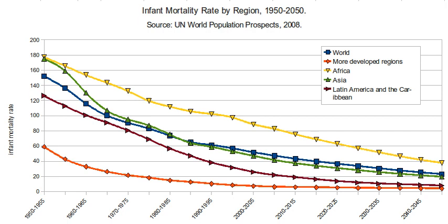Low birth weight makes up 60–80% of the infant mortality rate in developing countries. The New England Journal of Medicine stated that the lowest mortality rates occur among infants weighing 3,000 to 3,500 grams. For infants born weighing 2,500 grams or less, the mortality rate rapidly increases with decreasing weight, and most infants weighing 1,000 grams or less die. Compared with normal birth weight infants, those with low weight at birth are almost 40 times more likely to die in the neonatal period, and for infants with very low weight, the relative risk of neonatal death is almost 200 times greater.